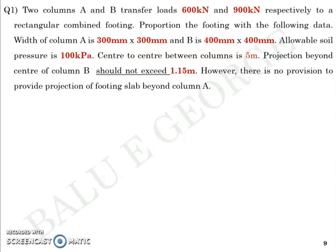Now based on what we have discussed, we will try to solve a numerical problem to design a rectangular combined footing. In this present question, it's quite simple and one of the simplest that you can expect for this kind of numerical problem. Two column loads A and B transferring loads 600 kN and 900 kN respectively to a rectangular combined footing. You are asked to proportion the footing with the following data.